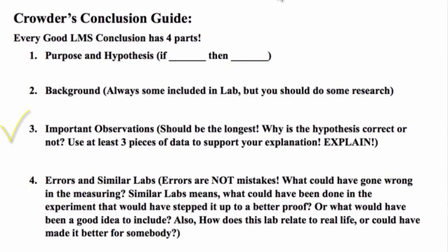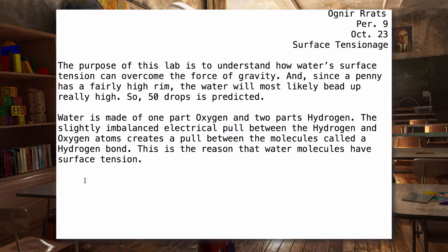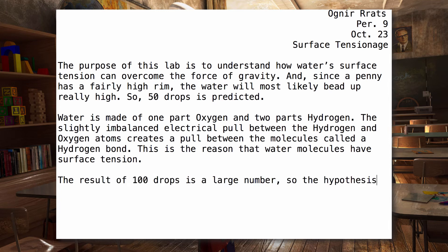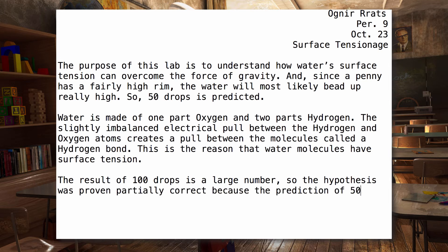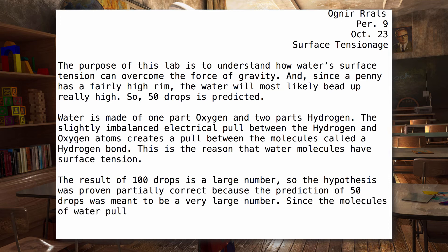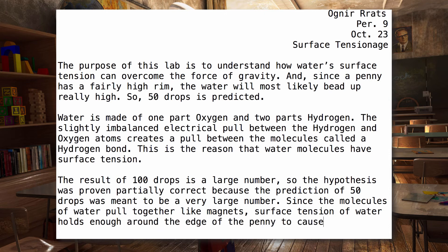Third: important observations. This should always be your biggest part. It's where you state whether the hypothesis was correct or not, why the lab came out the way it did, and you list at least three different things to support your explanation — we call these things data. For example: the result of 100 drops is a large number, so the hypothesis was proven partially correct because the prediction of 50 drops was meant to be a very large number. Since the molecules of water pull together like magnets, surface tension of water holds enough around the edge of the penny to cause a large bubble to form above the top of the penny.